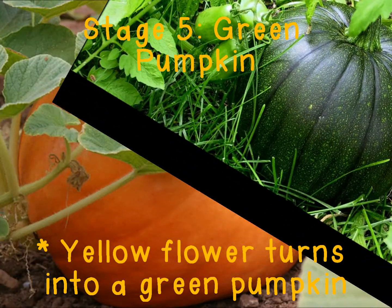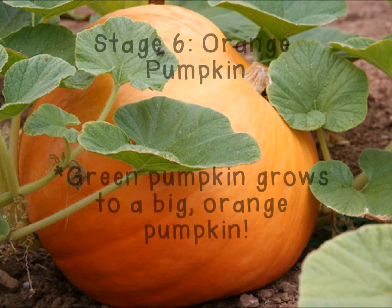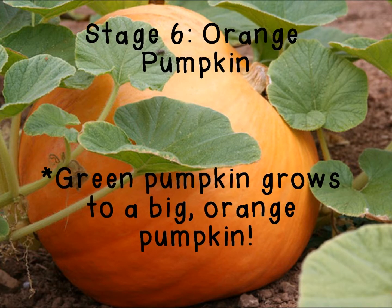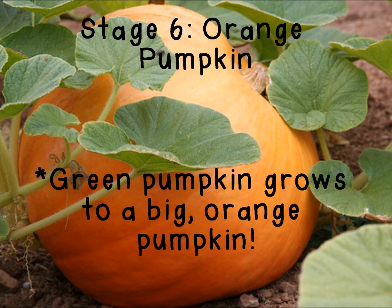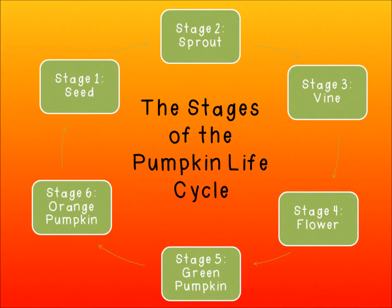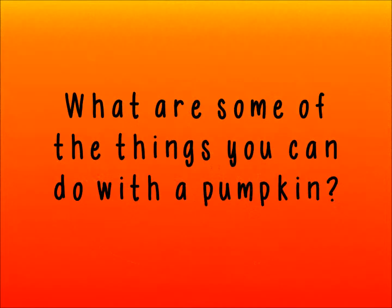In the sixth and final stage of the pumpkin life cycle, the pumpkin grows to be a big orange pumpkin. Now that we have reviewed the six stages of the life cycle of a pumpkin, what are some of the things you can do or make with a pumpkin?